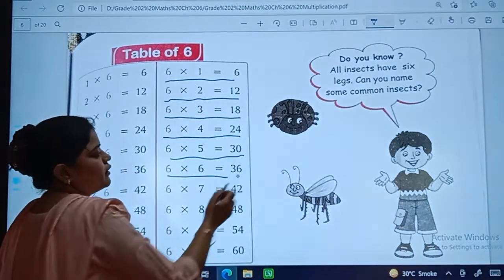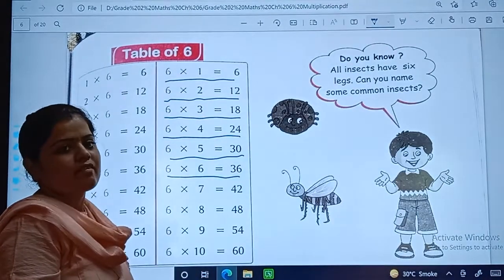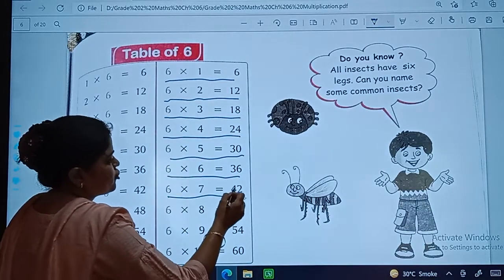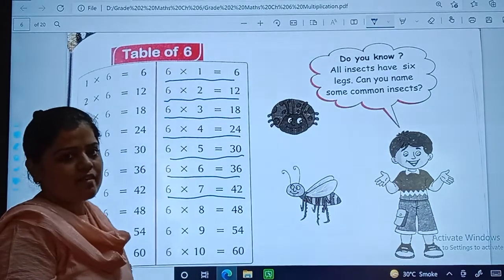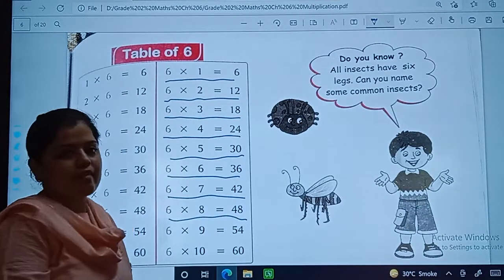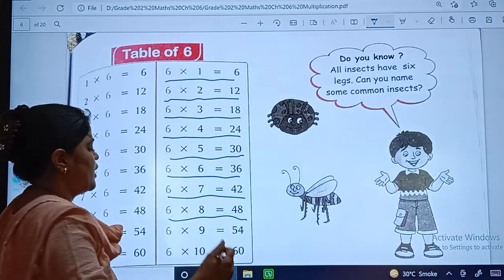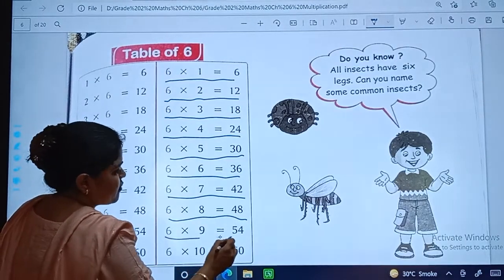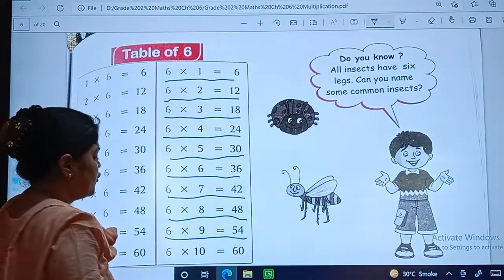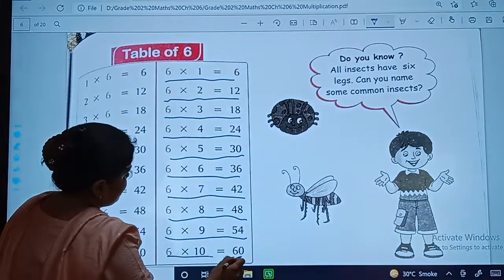6 sixes are 36. 6 sevens are 42. 6 eights are 48. 6 nines are 54. 6 tens are 60.